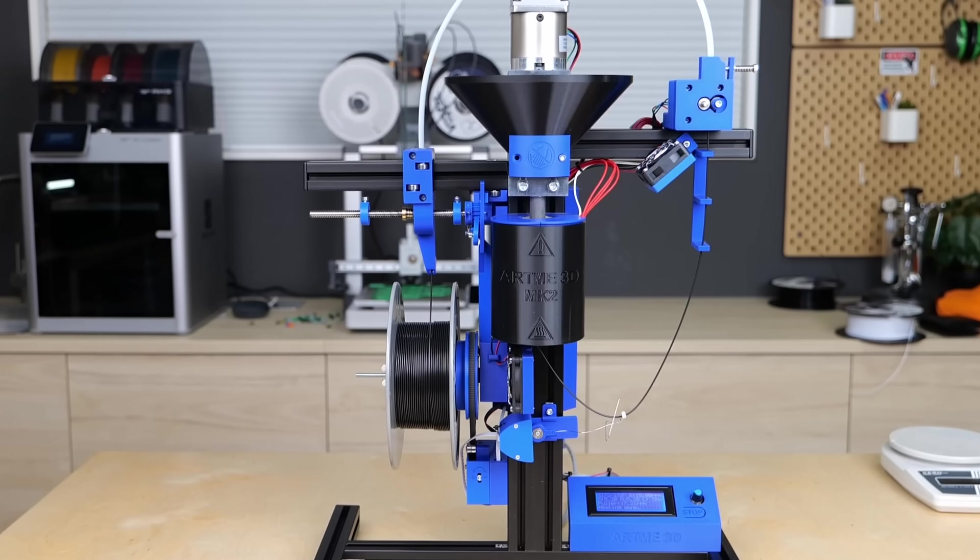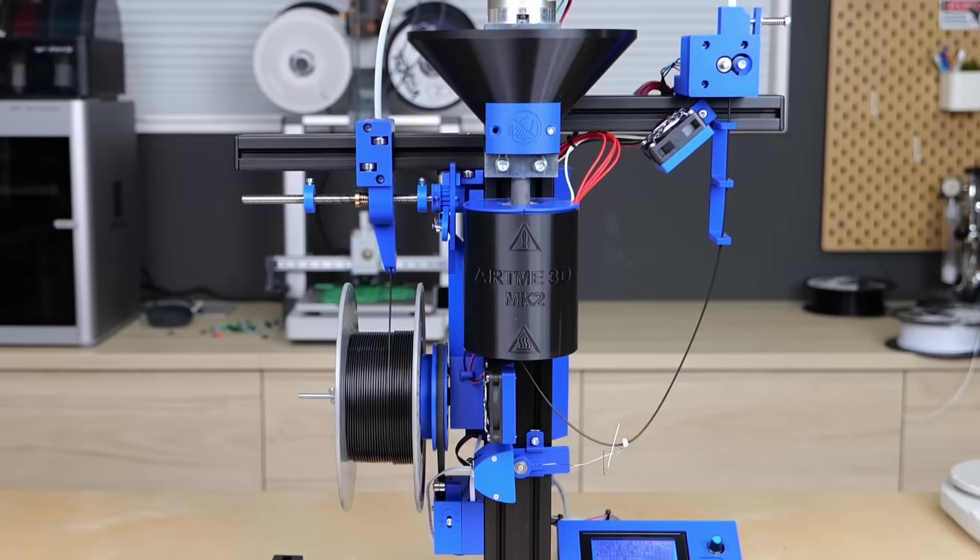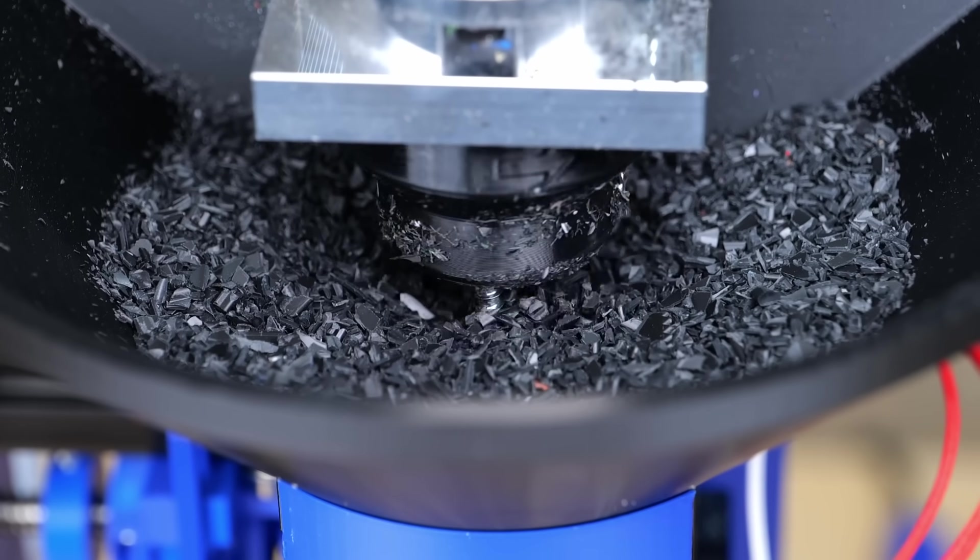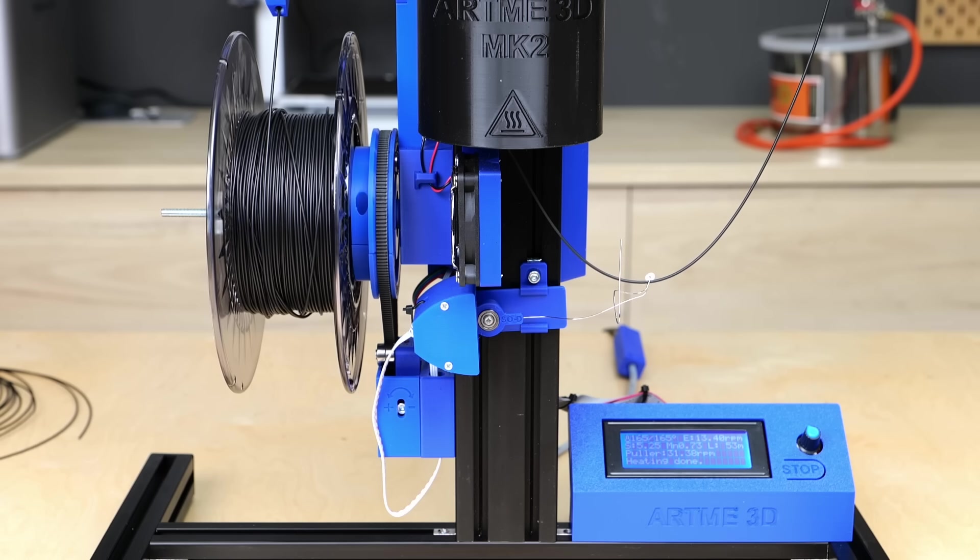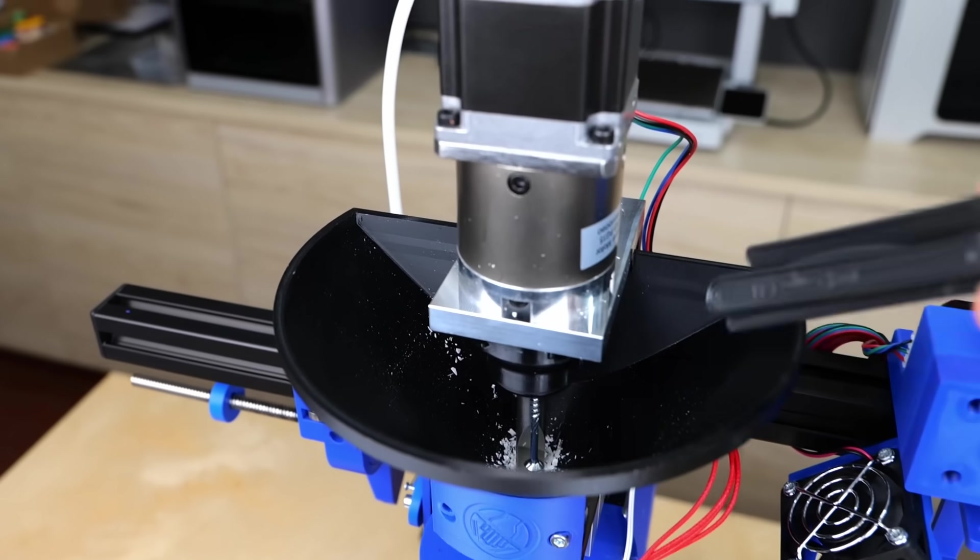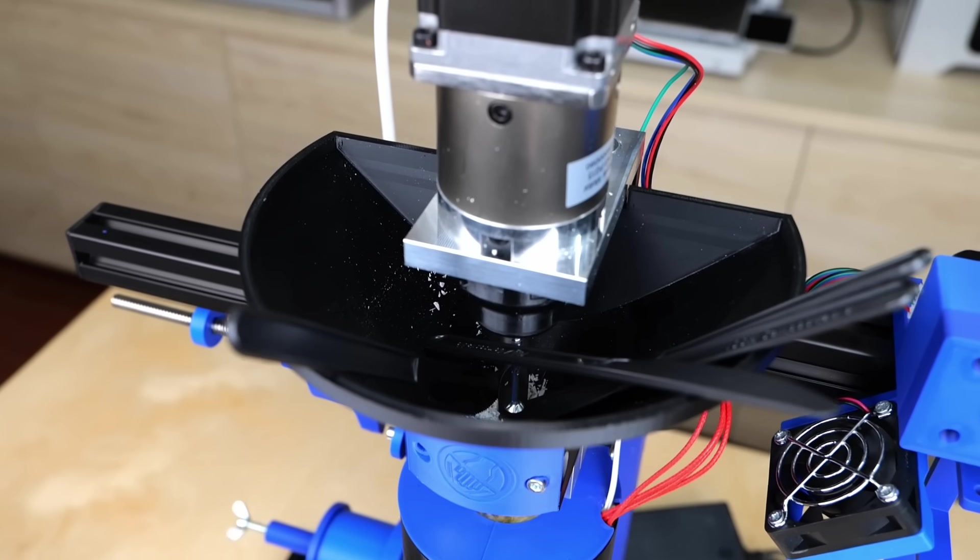I'll be using my new DIY desktop filament extruder to recycle this material. The Artme 3D will feed the plastic into a long melt zone using a screw and then extrude a thin filament that gets wound onto a spool. Yet our forks and knives obviously won't fit into the extruder and will need to be shredded.